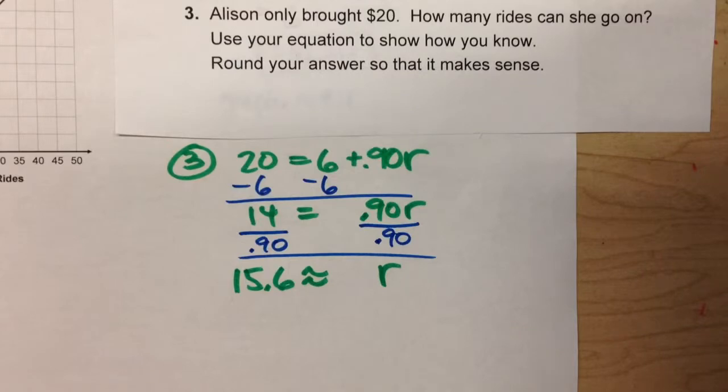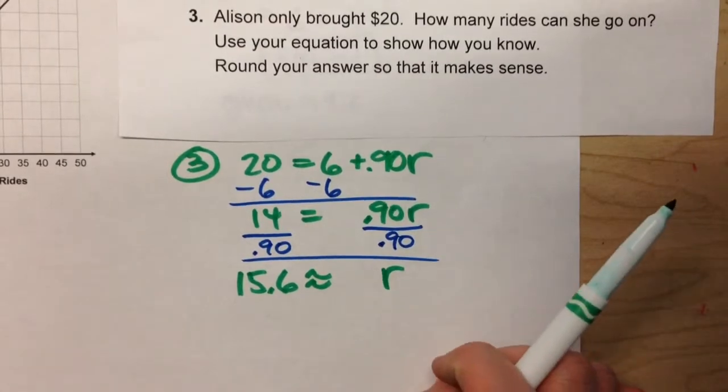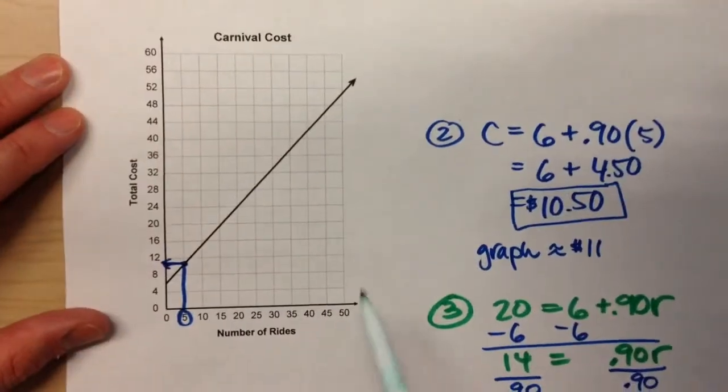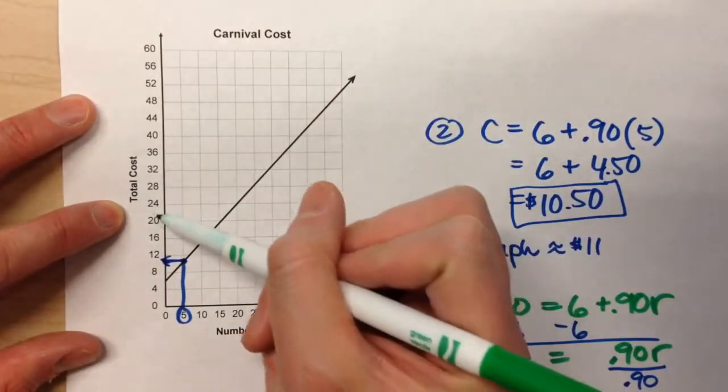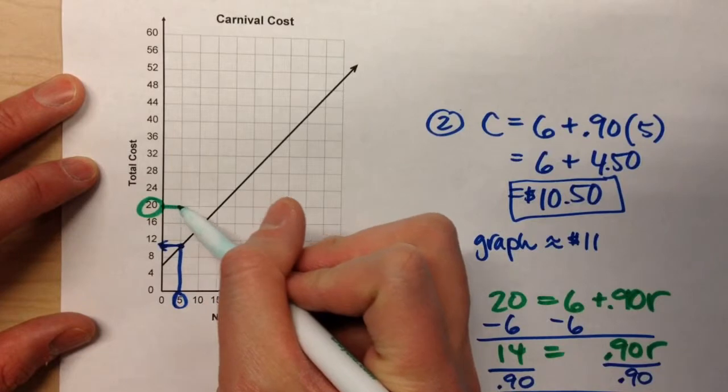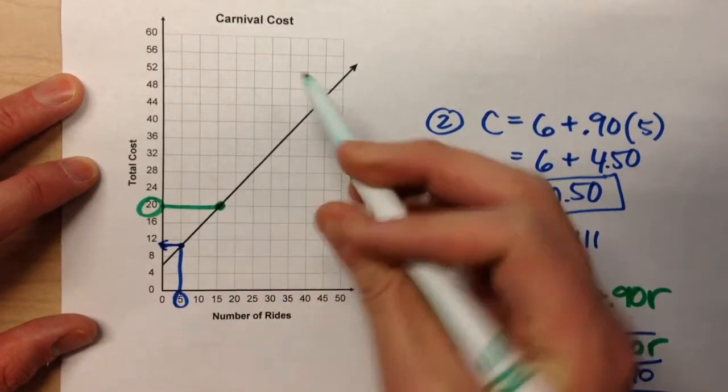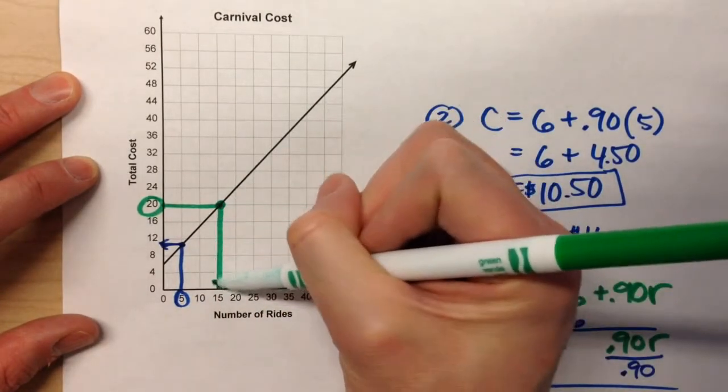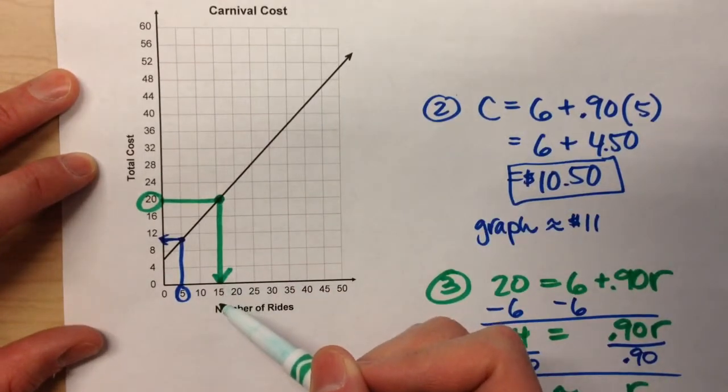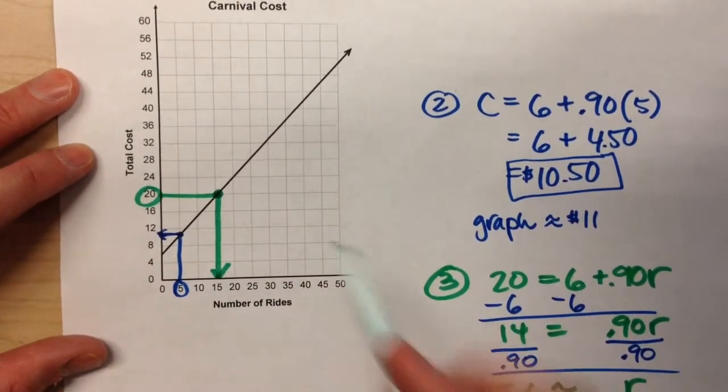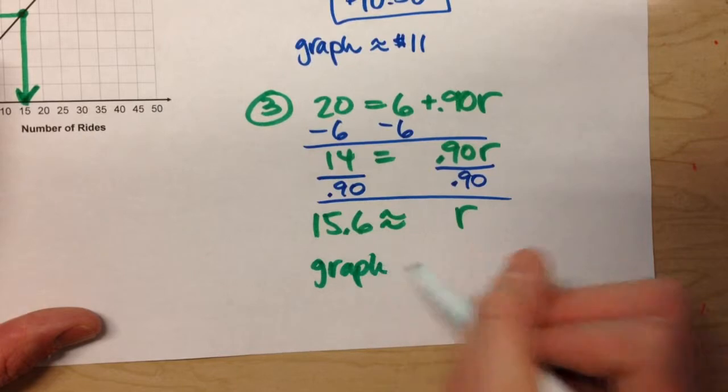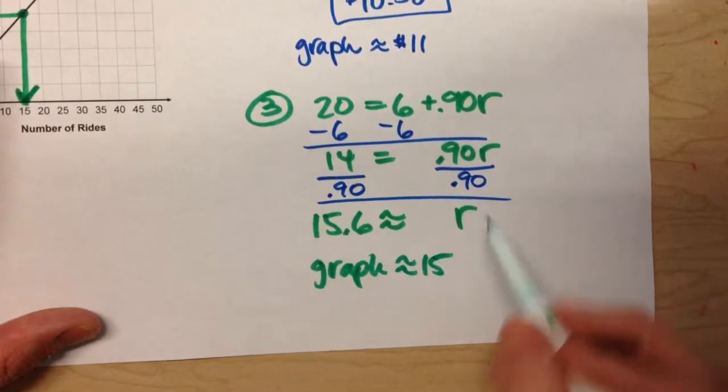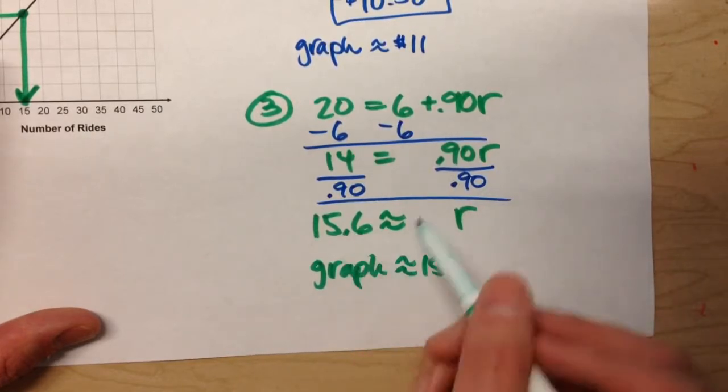But turns out we could have found that exact same answer or very similar to that answer using the graph. So, let's do it the graph way now. For the graph, we had $20. So this time we're going to start on the cost axis at $20 and follow the grid line over until we hit the graph. And then go down. And notice, it's just a little bit more than 15 based on our graph. So we can estimate that it would be about 15 rides. So on the graph, it's about 15 rides, which is the same answer as what we would have got algebraically.